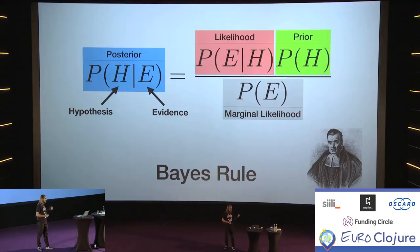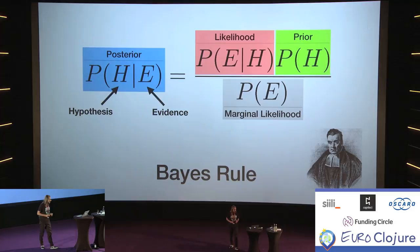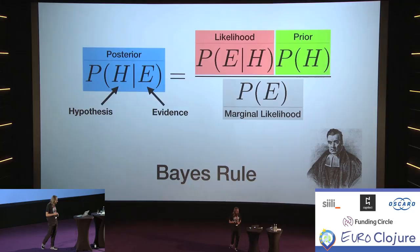Then there's the likelihood — the probability that your model will produce this evidence given that the hypothesis is true. And then there's the marginal likelihood, which is harder to explain: it's an average over the likelihood of the evidence over your whole model. As we'll see in a few slides, this has a heavy impact on the computational cost of these inference methods.